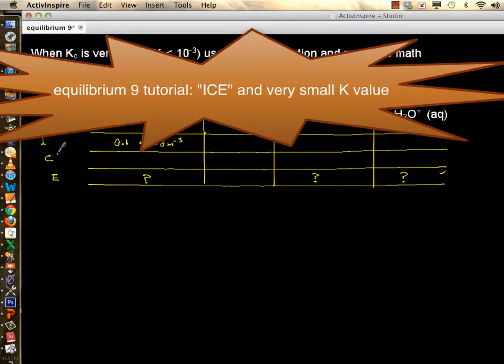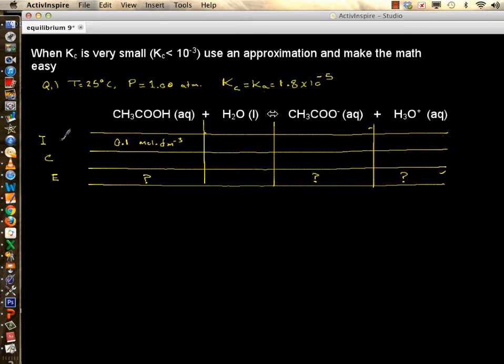In this tutorial, I want to do another ICE calculation, but this time with an approximation. If Kc is given to you and it's less than 10 to minus 3 magnitude, you can make an assumption and make the math easier.